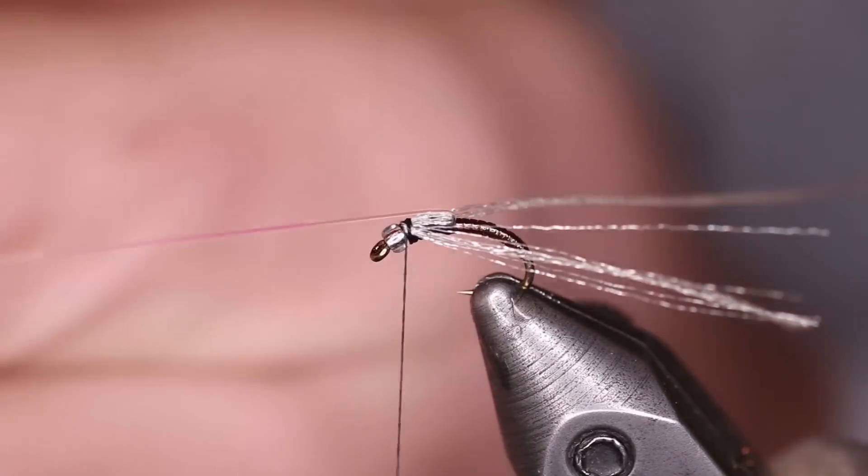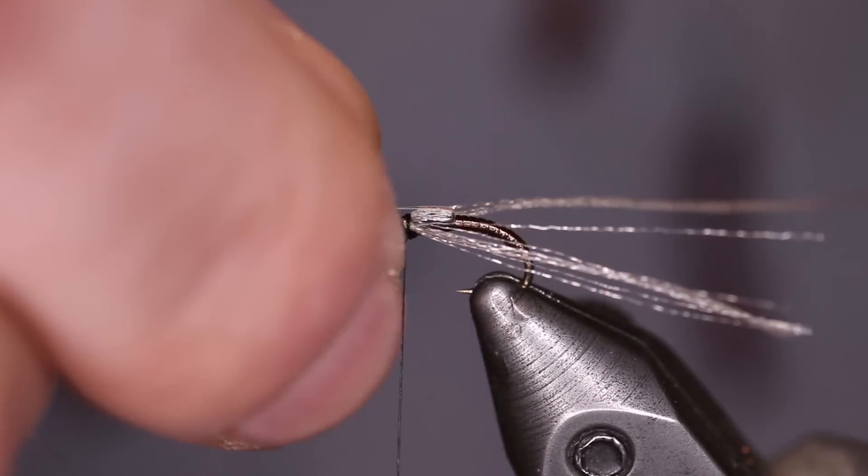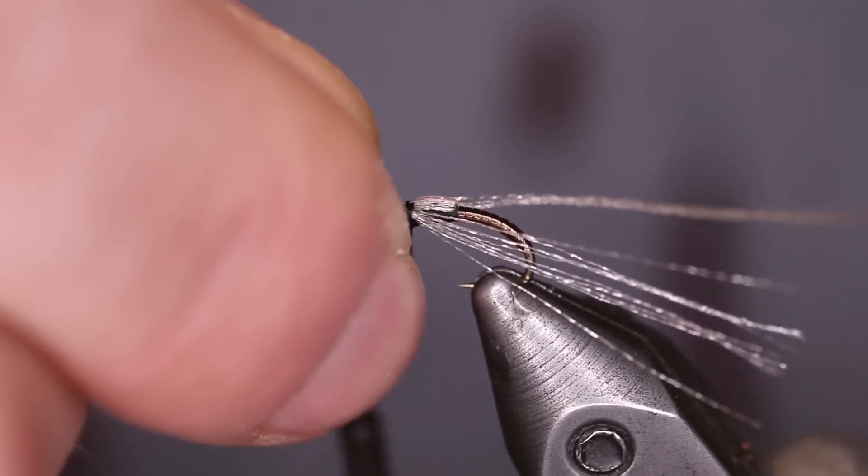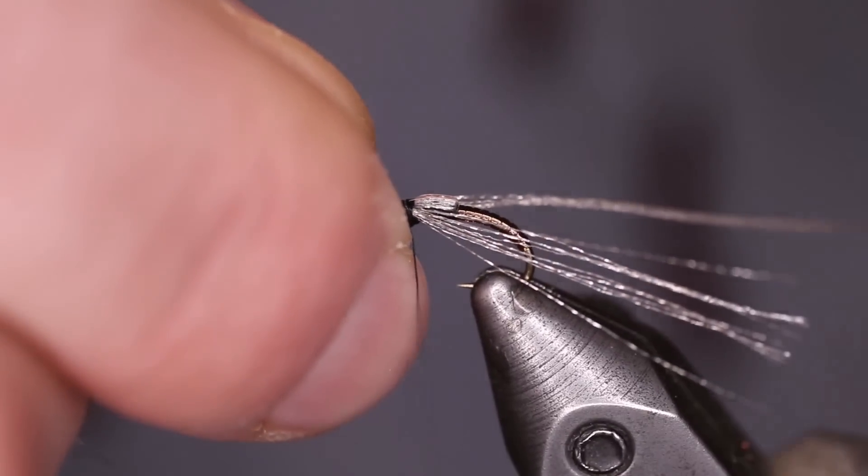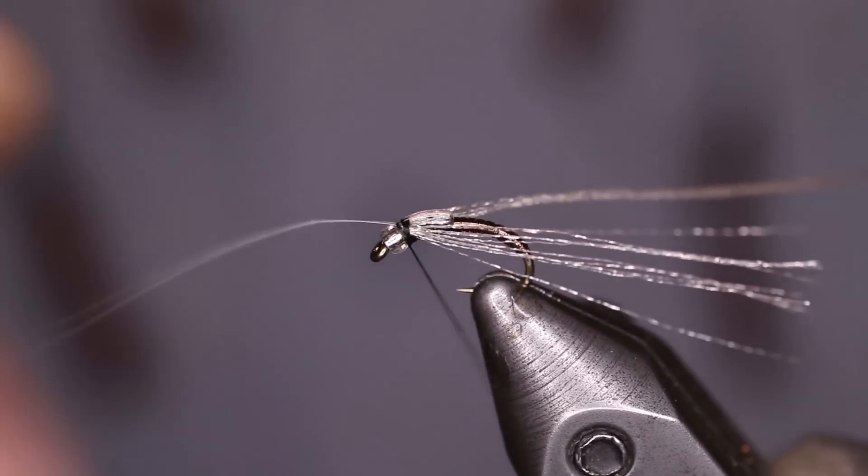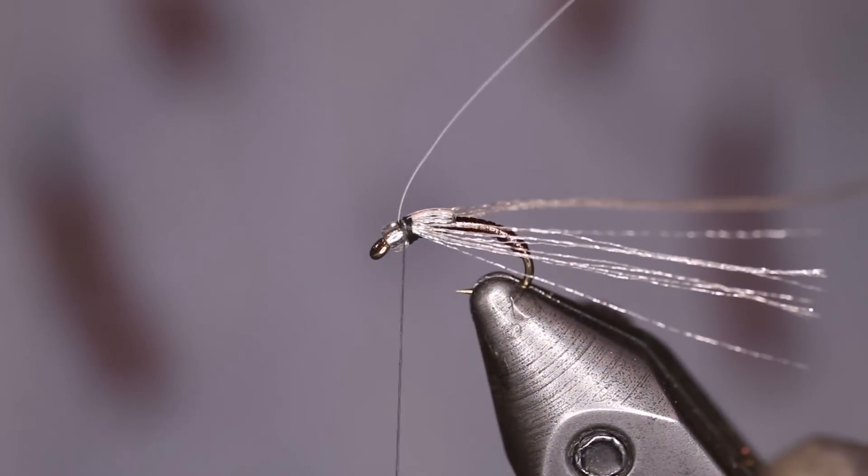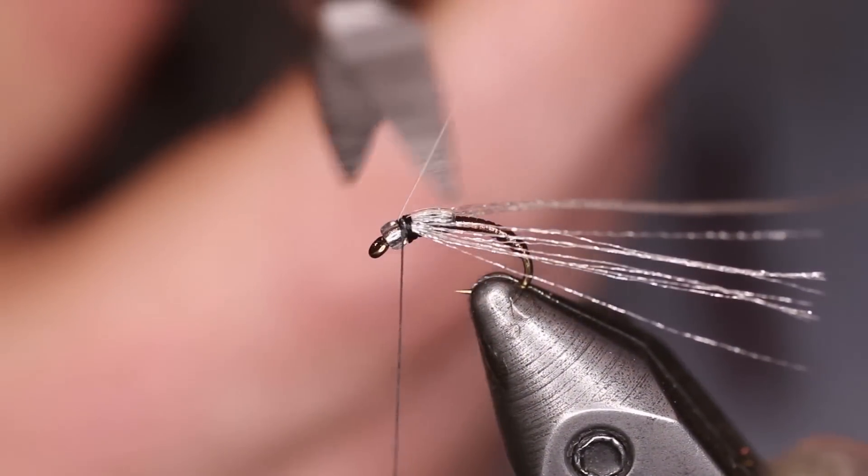Next, we'll pull the flashaboo up over the top just to add a little pop to this fly. A couple of turns over the top, one in front. Then we'll trim that off really close.